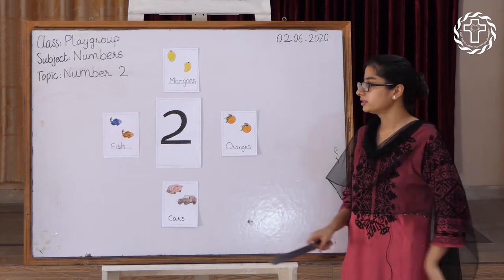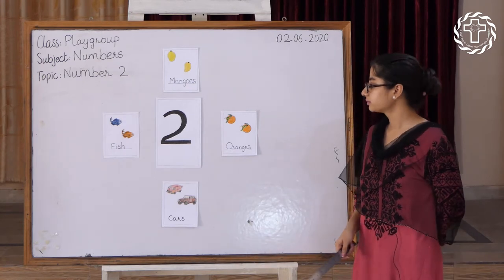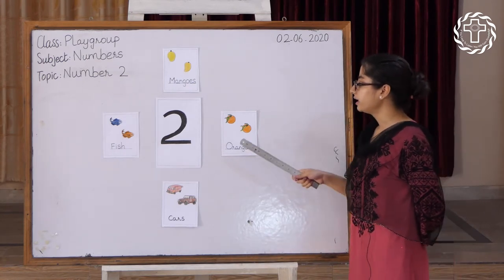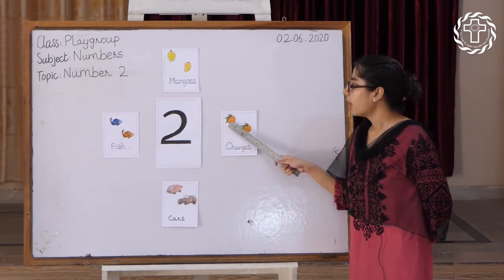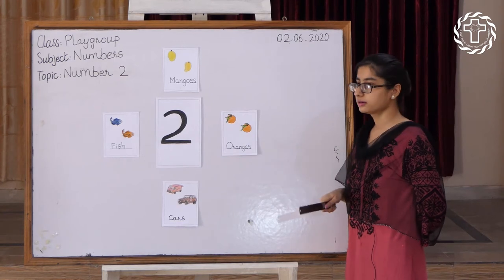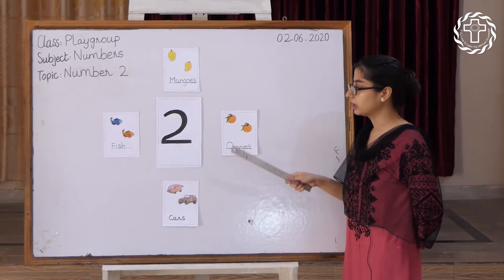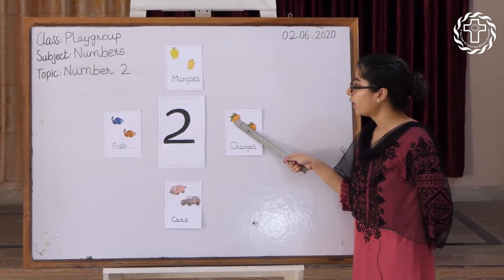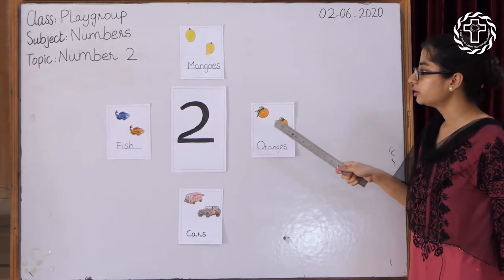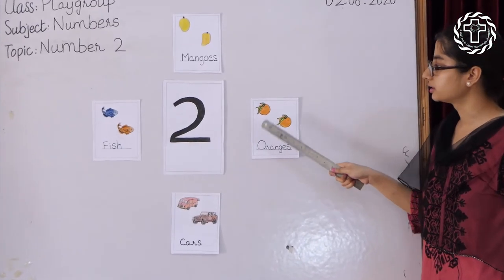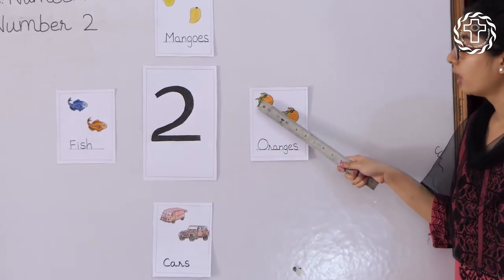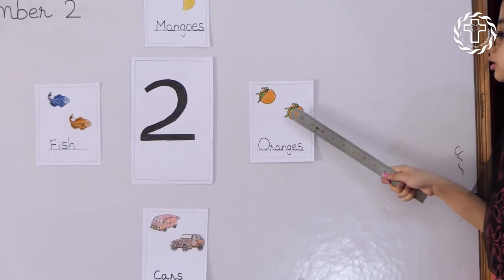Look at these pictures. Tell me, how many oranges are here? Let's count. One, two. Two oranges. How many oranges are here? One, two.